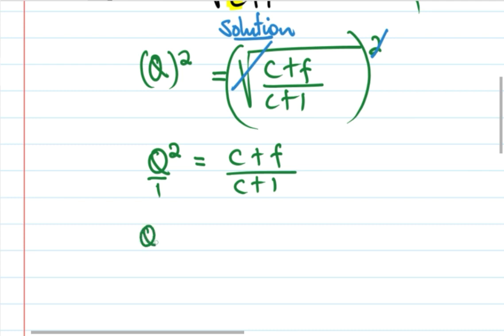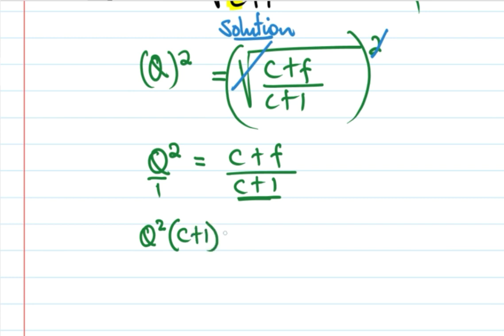When we write the solution, Q squared times (C plus 1) is equal to C plus F.